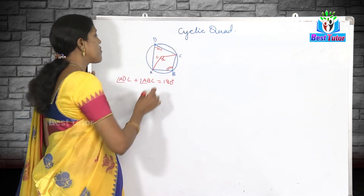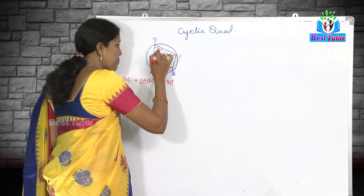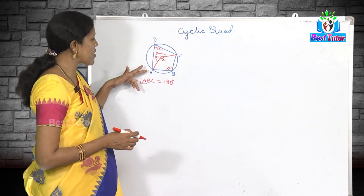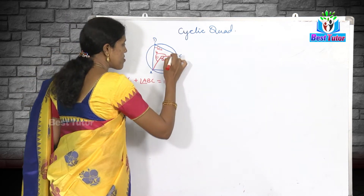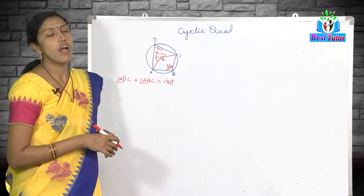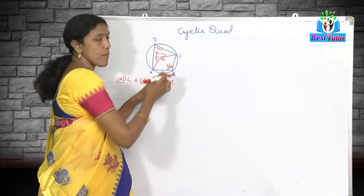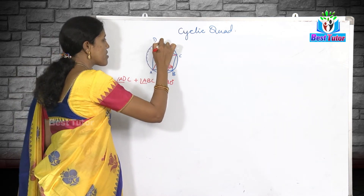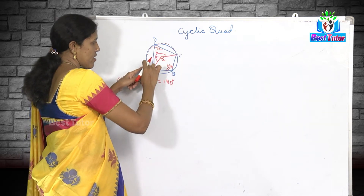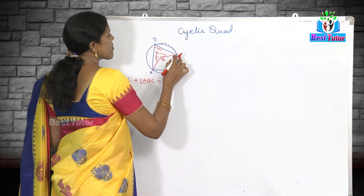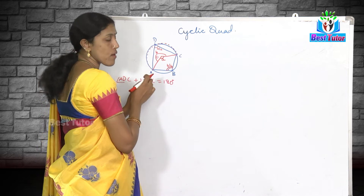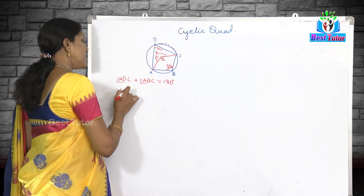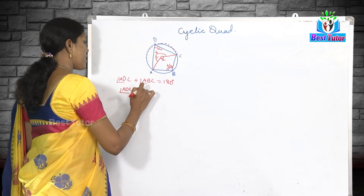Now let me assume that the reflex angle of angle AOC is equal to 'b'. The angle corresponding to this reflex angle at the circumference is angle ABC, which will be b/2, by using the same property — the angle subtended by an arc at the center is twice the angle made by the same arc at any point on the remaining part of the circle. So if the reflex angle AOC is 'b', then angle ABC is b/2.